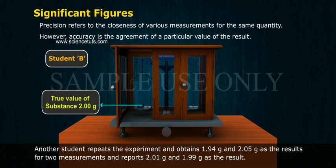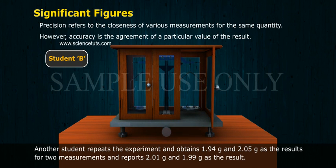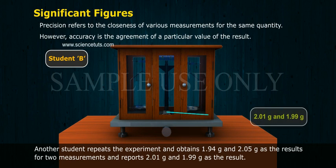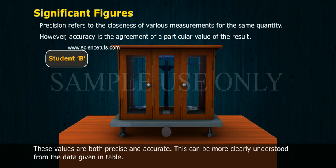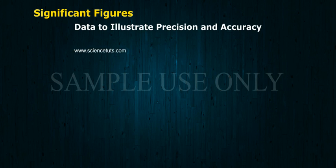Another student repeats the experiment and obtains 1.94 grams and 2.05 grams as a result for two measurements and reports 2.01 grams and 1.99 grams as a result. These values are both precise and accurate. This can be more clearly understood from the data given in table to illustrate precision and accuracy.